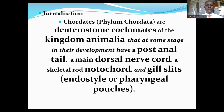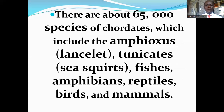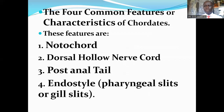We want to look at some very important features of the chordates. There are about 65,000 species of chordates, and they include the amphioxus or the lancelets, the tunicates which are also called the sea squirts, the fishes, the amphibians, the reptiles, the birds, and the mammals — including us — belong to the Phylum Chordata.